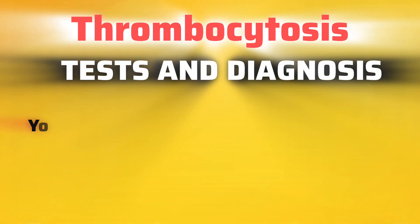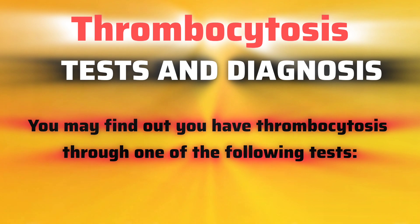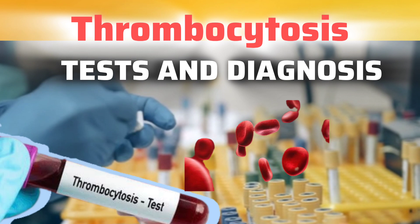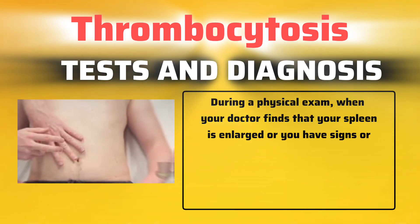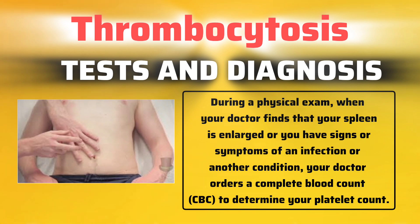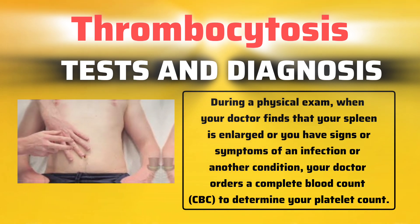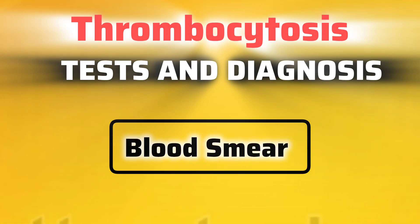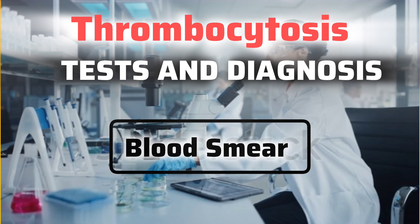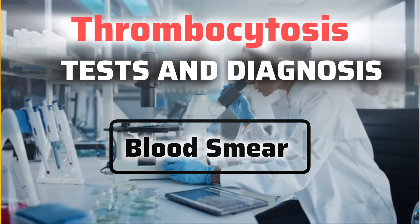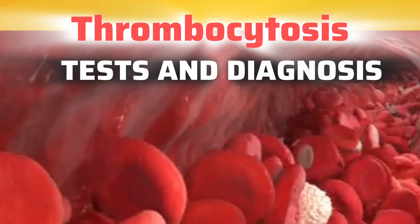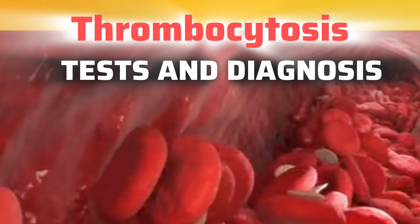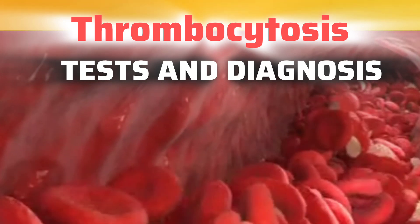Tests and diagnosis: You may find out you have thrombocytosis through one of the following tests — a routine blood test that shows a higher than normal platelet count, or during a physical exam when your doctor finds that your spleen is enlarged or you have signs or symptoms of an infection or another condition. Your doctor orders a complete blood count to determine your platelet count. A blood smear, a test in which a small amount of your blood is examined under a microscope, helps determine the condition of your platelets. Because a number of conditions can cause a temporary rise in your platelet count, your doctor will likely repeat the blood tests to see if your platelet count remains high over time.